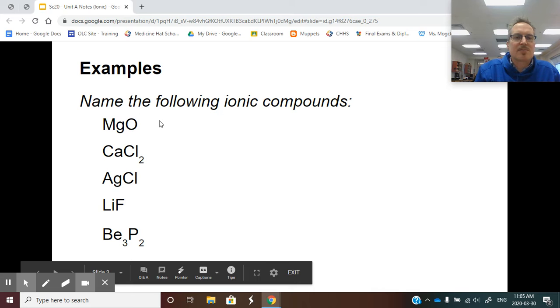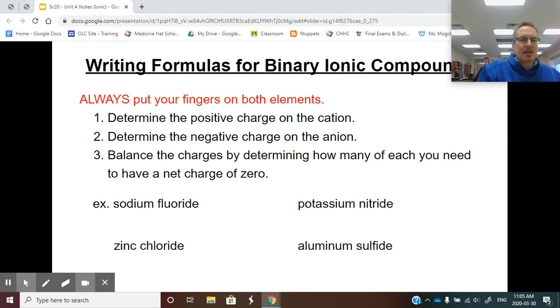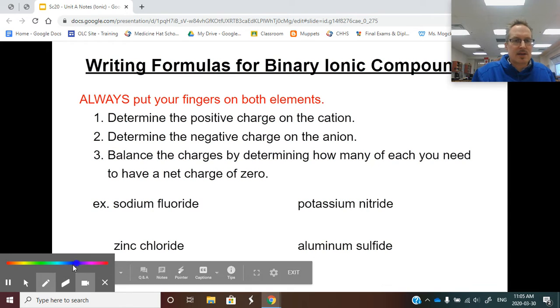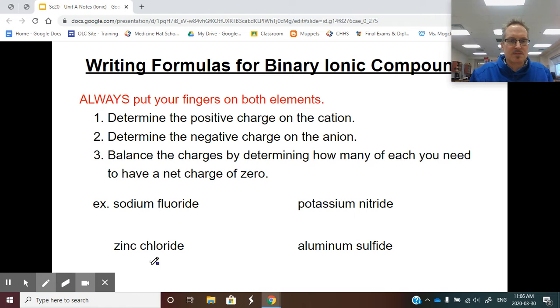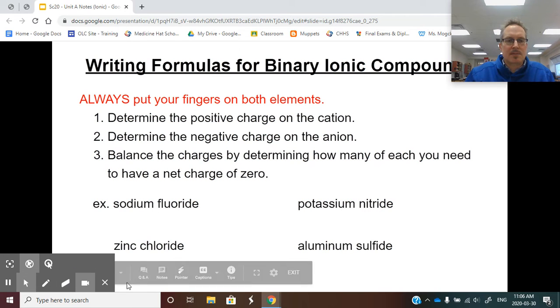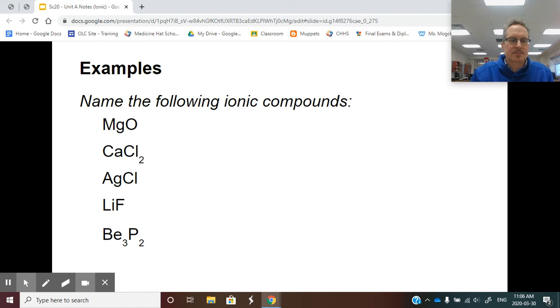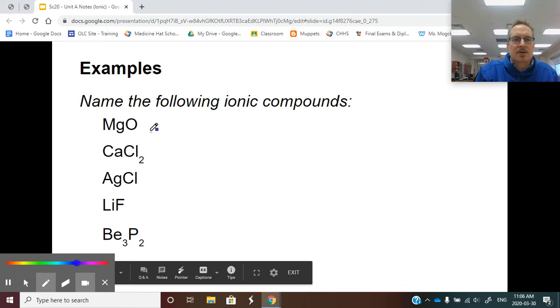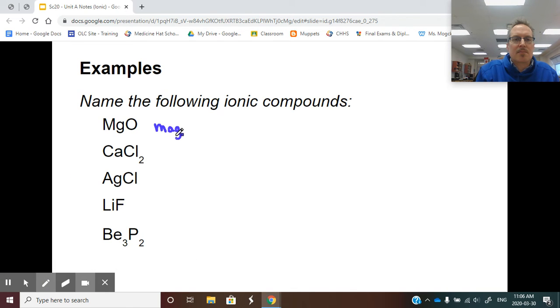Magnesium has only one possible charge. We would call it magnesium oxide. Found calcium. Calcium only has one charge. So we would call this calcium chloride.